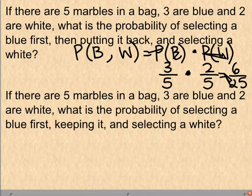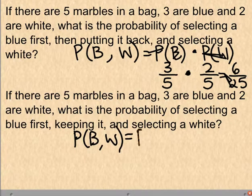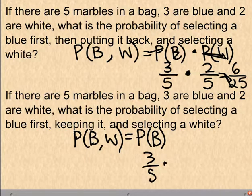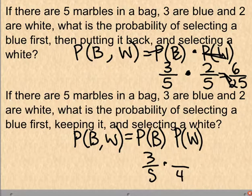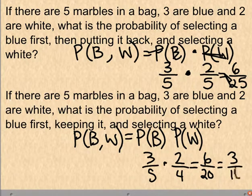For dependent probability (without replacement), we want blue then white again, but we keep the blue marble. The probability of blue is still 3/5, but now only 4 marbles remain with 2 white, so white is 2/4. Multiplying: 3/5 × 2/4 = 6/20, which reduces to 3/10.